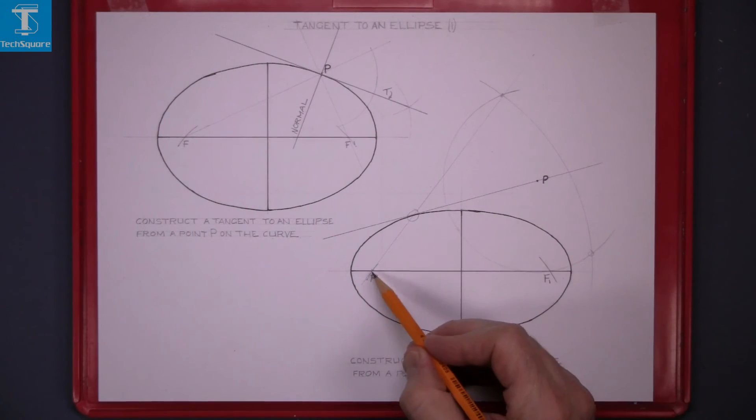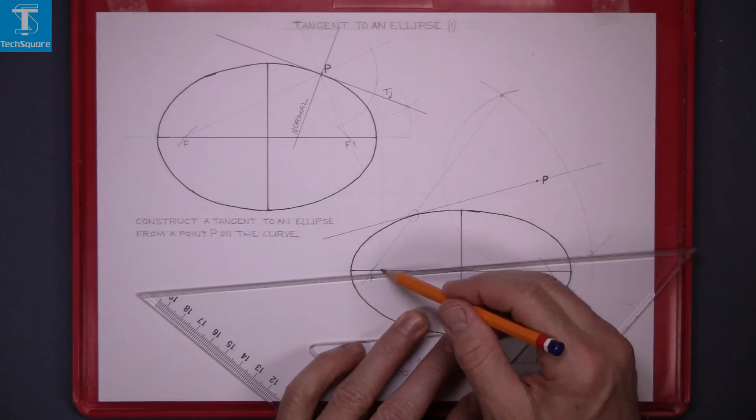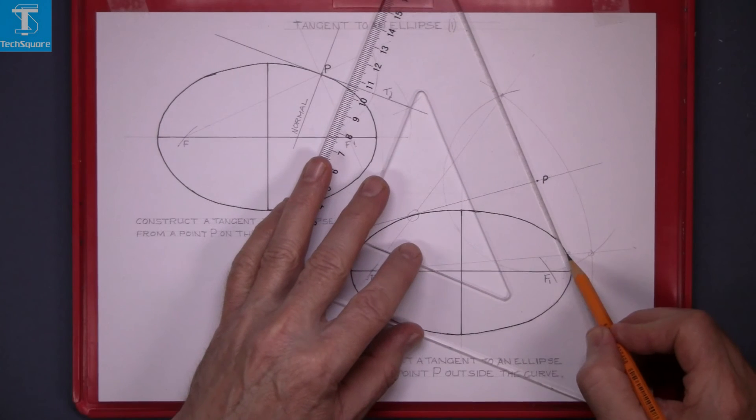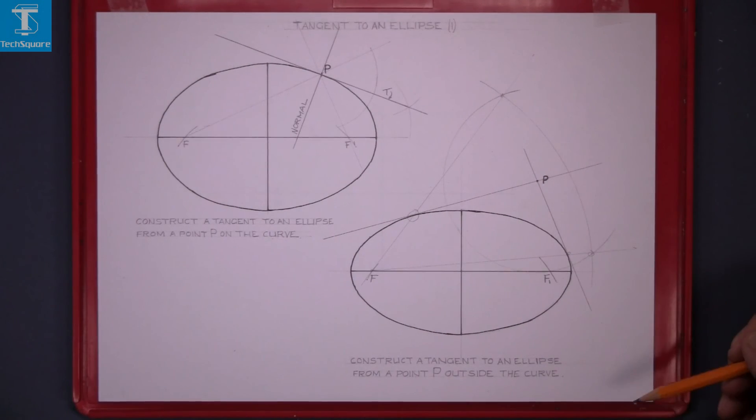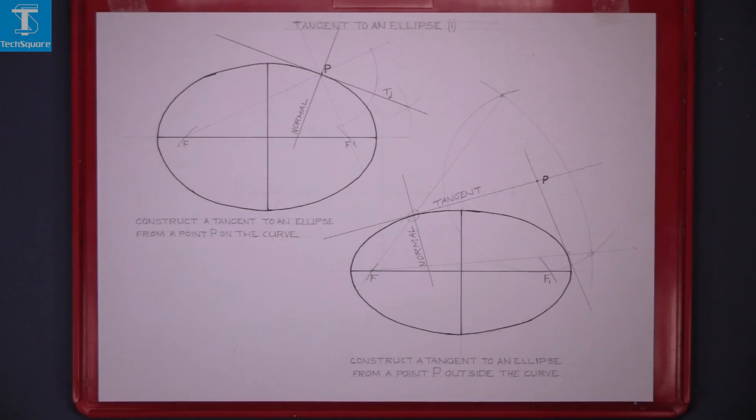Do the same on this other side. Another point of contact. Join P through that point and that's the tangent. Then construct the normal as before. And that's this exercise on tangents complete.